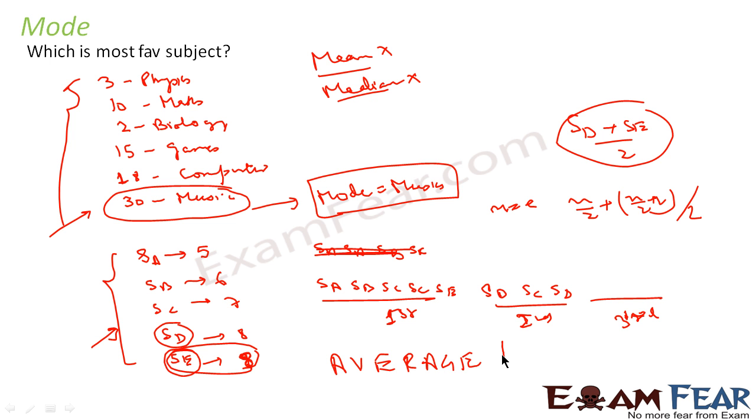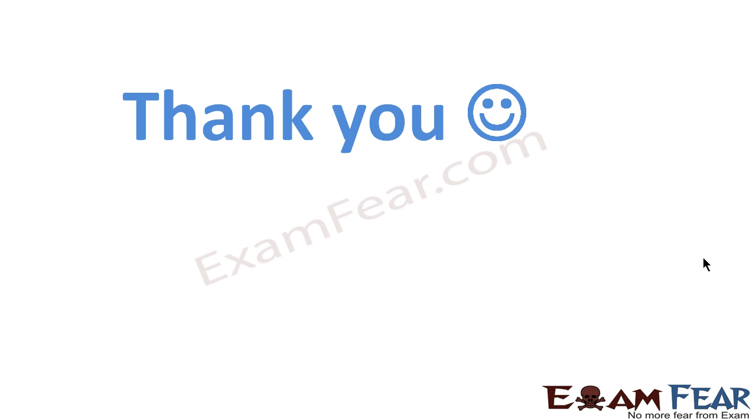Please remember, there is no term called average mode. If there are two items which have the same frequency, the maximum frequency, then we say the mode is this comma this. For example, in this case, both are eight, so let's say the mode is student D and student E - both are equally irregular. Thank you.